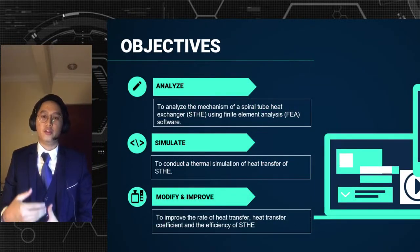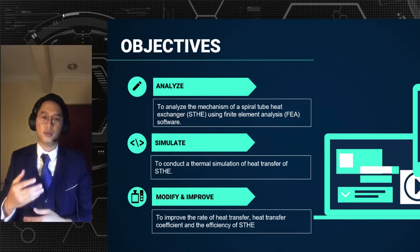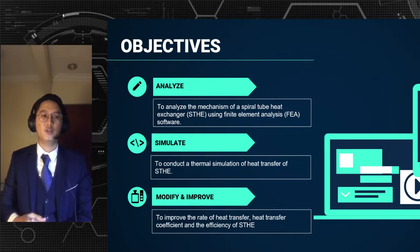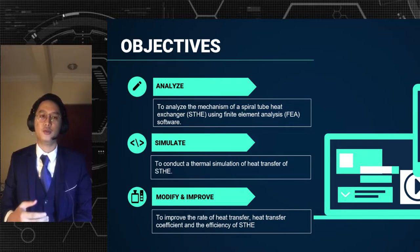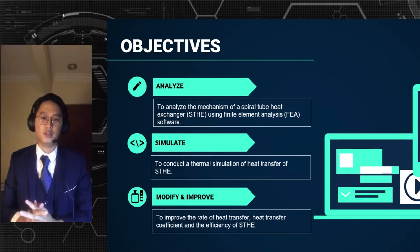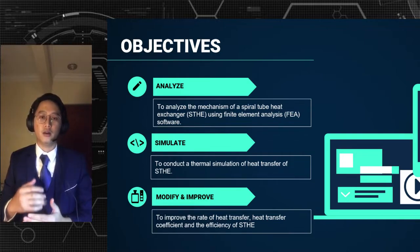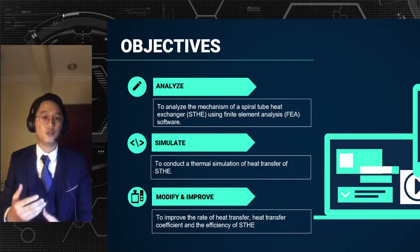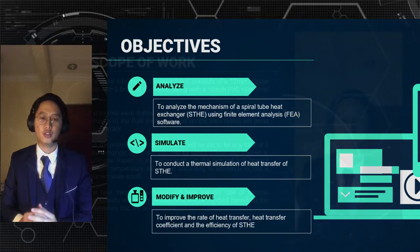We come across the objectives to overcome these problem statements. First, to analyze the mechanisms of a spiral tube heat exchanger using the finite element analysis or FEA software. Second, to conduct a thermal simulation for the particular heat exchanger. And the last one is to improve the rate of heat transfer, the heat transfer coefficient, and also the efficiency of the spiral tube heat exchanger.